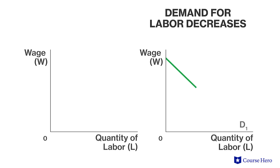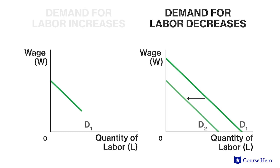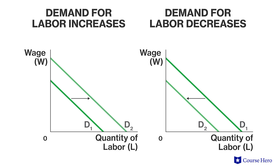A change in wage results in a movement along a labor demand curve, just as a change in the price of a good causes movement along the demand curve for that good. Wages that rise too high can decrease the quantity of labor demanded, while low wages increase the quantity of labor demanded.